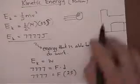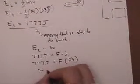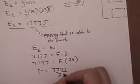Okay, so this moves 25 meters. Okay, so I'm going to solve this thing out. I'm going to get 7,777 divided by 25.